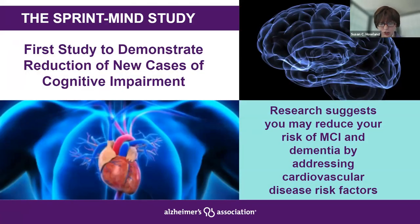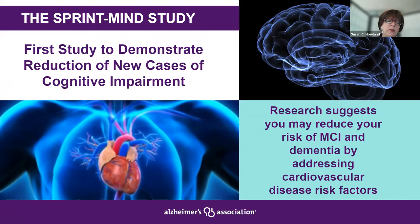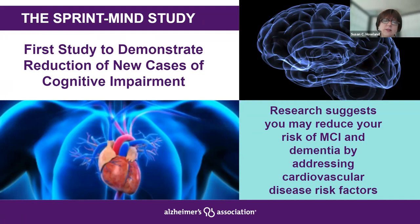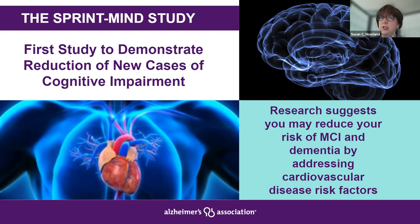One study that has shown the ability to reduce cognitive decline is the SPRINT MIND study. This tested whether aggressively treating blood pressure — specifically keeping the systolic number at about 120 — would decrease the risk for developing cognitive impairment and dementia. They found that this is the case, telling us there are things we can do today to help reduce our risk and keep our brain healthy — the idea that what's good for our heart is good for our brain. The SPRINT MIND study allowed individuals to work one-on-one with their physician about what medication and lifestyle interventions best achieve that 120 systolic blood pressure.